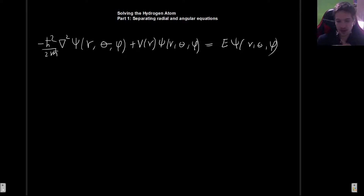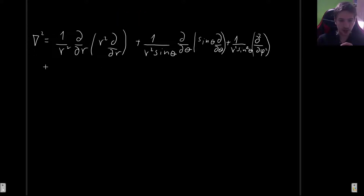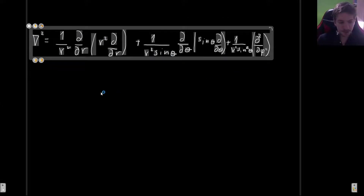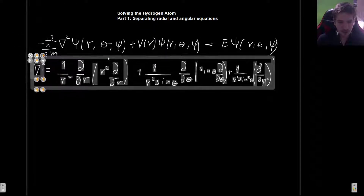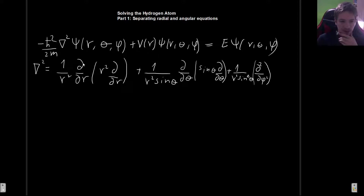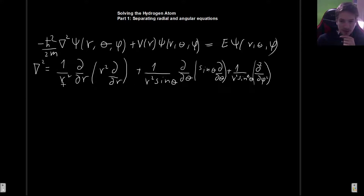Since we are in spherical coordinates we need to write the Laplacian in spherical coordinates — a procedure you may have seen in mathematical methods courses or electromagnetic theory. I'm not going to derive it here as it's more mathematics than physics, but the Laplacian is: (1/r²)(∂/∂r)(r² ∂/∂r) + (1/r² sinθ)(∂/∂θ)(sinθ ∂/∂θ) + (1/r² sin²θ)(∂²/∂φ²). If you haven't seen it before, you can pause and look up the derivation.